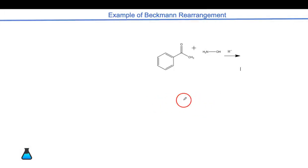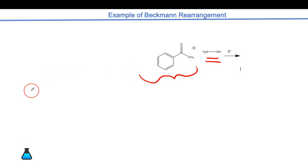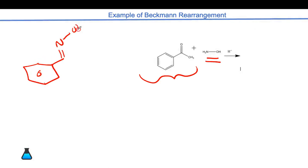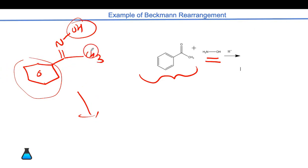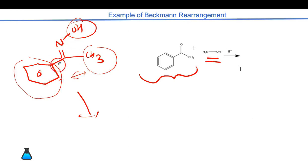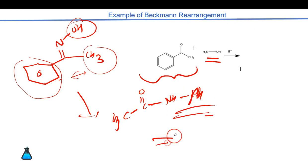Let's take one more example — a ketonic group treated with NH₂OH. When such a ketone reacts, at the first step you get the oxime with a C=N–OH. In such cases, you may not know which group is anti to the hydroxy group — whether phenyl or methyl — so when asked, migrate based on migration tendency. The phenyl group migrates, giving the final amide product.